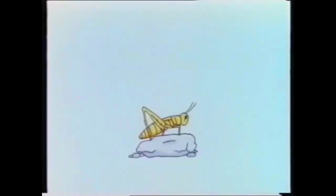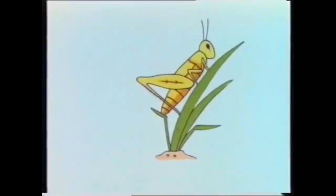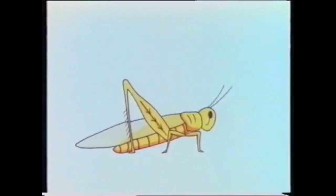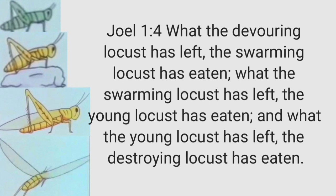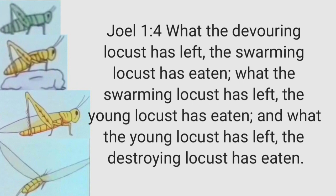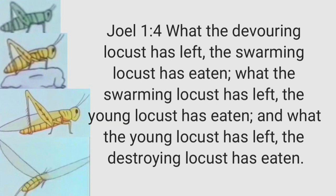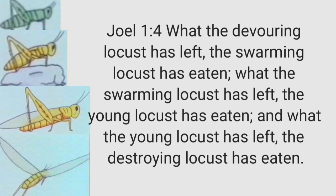Here's an animation of the stages of the locust, and there's no worm. The locust immediately comes out of its encasing in the ground as a young locust — this is our first stage — and then it begins to grow like a grasshopper. It has no wings in the grasshopper stage, the devouring locust. In its last phase, it sheds that skin and grows wings. Once it has wings, it's the final stage and it forms the swarm. So those are the four stages: what the devouring locust has left, the swarming locust has eaten; what the swarming locust has left, the young locust has eaten; what the young locust has left, the destroying locust has eaten.